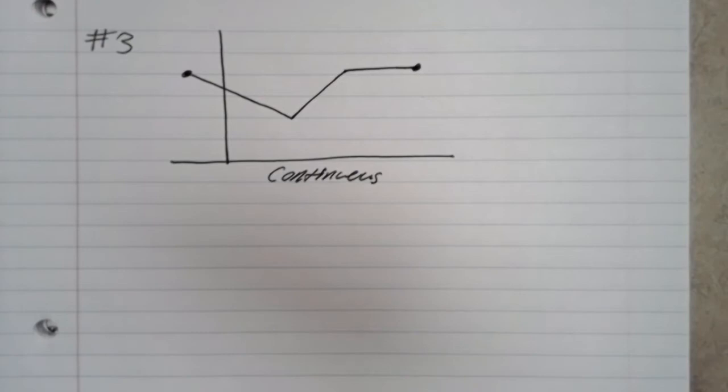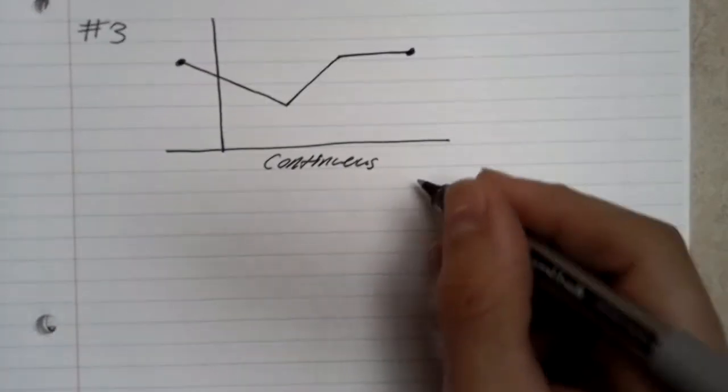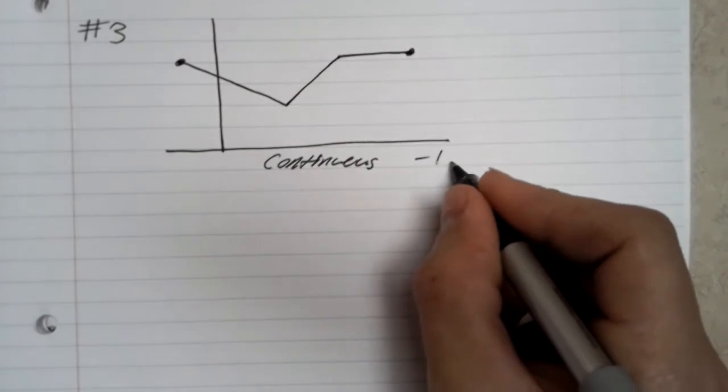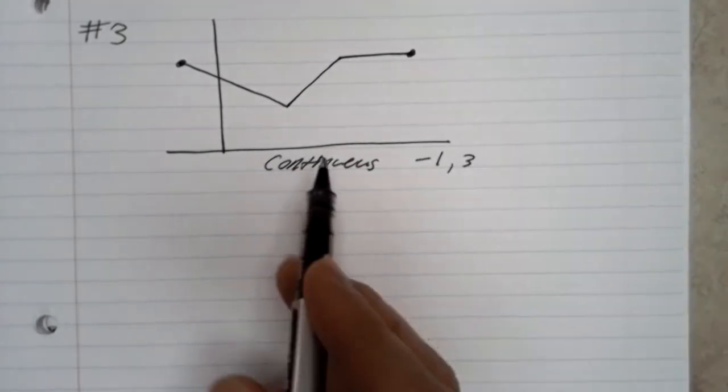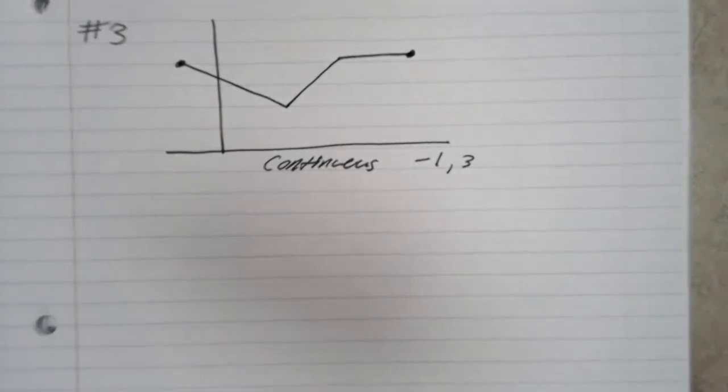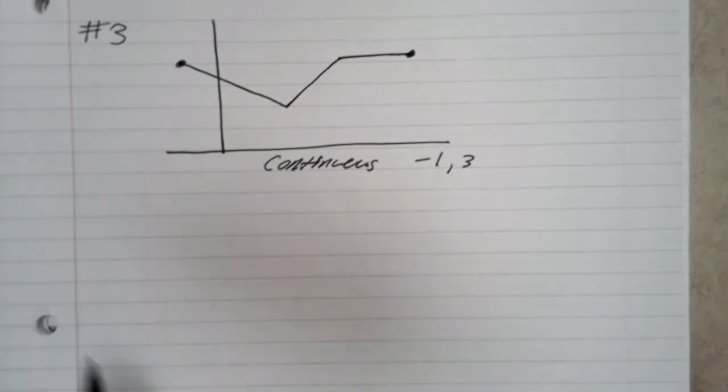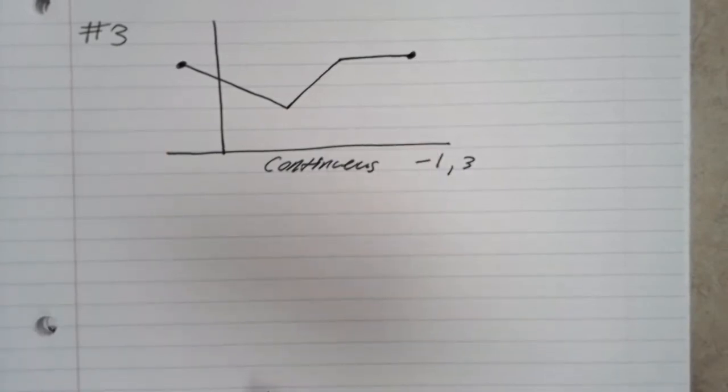I don't have the problem memorized, but if that's all the graph is, this is continuous everywhere. You might have asked if it was continuous at the point. It was negative 1 and 3, and negative 1 at that point, negative 3 at that point.